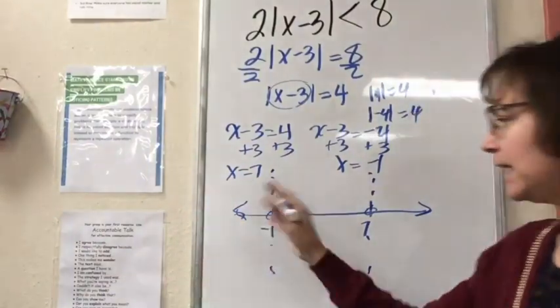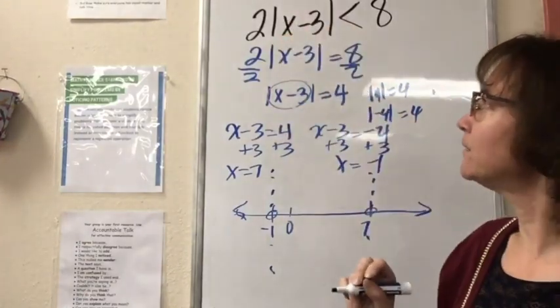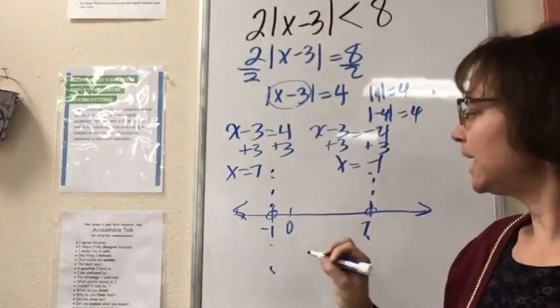Now I have this number line divided into three sections: to the left of negative 1, in between negative 1 and 7, and to the right of 7. I'm going to test my absolute value inequality in all of these.